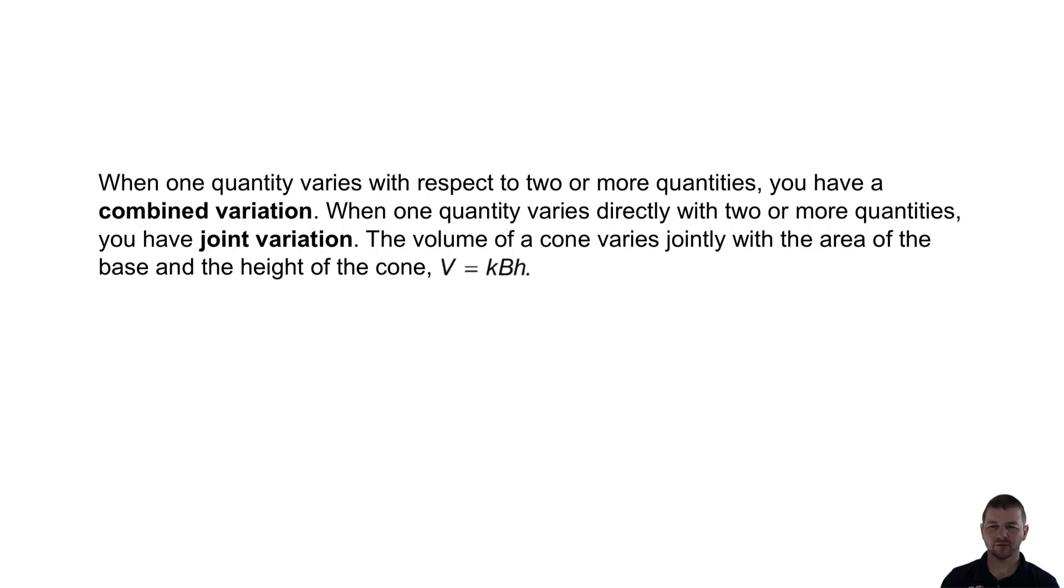When one quantity varies with respect to two or more quantities, you have a combined variation. When one quantity varies directly with two or more quantities, you have a joint variation.